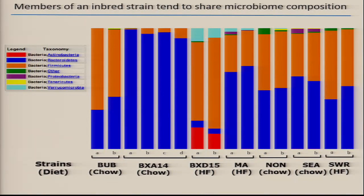Mice are coprophagic — if you raise mice within a cage, they tend to share microbiota. These are individuals raised in separate cages but all in our laboratory. Here are BUB mice and BXA14 mice, both on a chow diet — they're very different. Here are BXD15 on a high-fat diet and MA on a high-fat diet. You can see a lot of variation between strains but rather similar variation within strains.